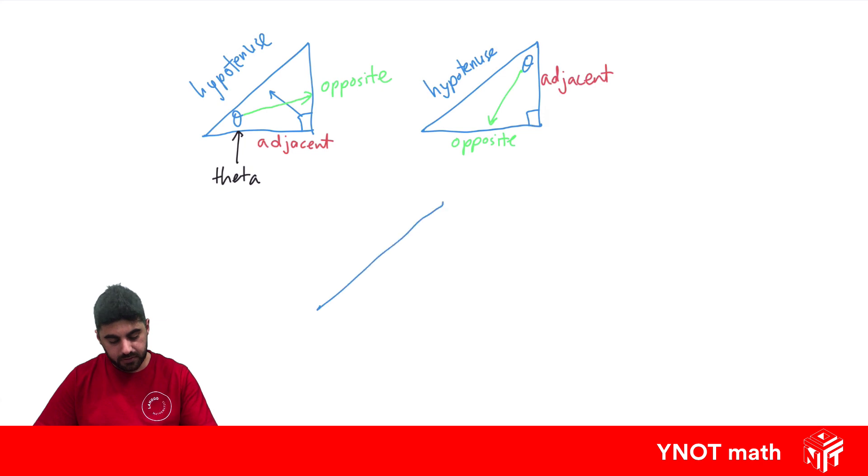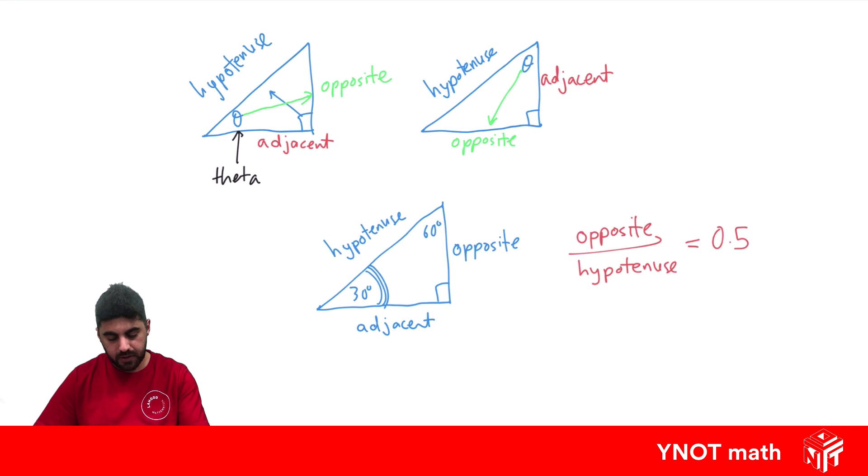In the last video, we saw in a 30 degree, 60 degree, right angle triangle, that when we took this side—we're going to use 30 as our reference, which means that this side is the opposite and this side is the adjacent. We saw that when you take the opposite side and divide it by the hypotenuse, we got a half, when we're referencing this angle of 30 degrees.